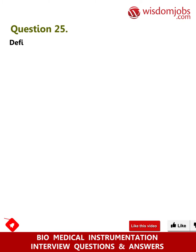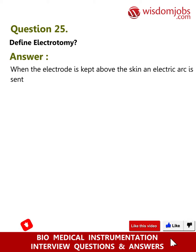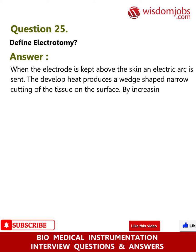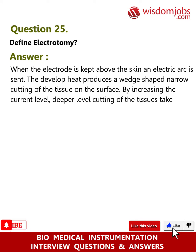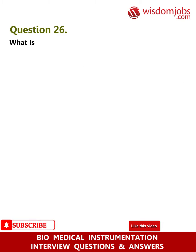Question 25: Define electrotomy. Answer: When the electrode is kept above the skin and an electric arc is sent, the developed heat produces a wedge-shaped narrow cutting of the tissue on the surface. By increasing the current level, deeper cutting of the tissues takes place. Normally, continuous RF current is used for cutting.